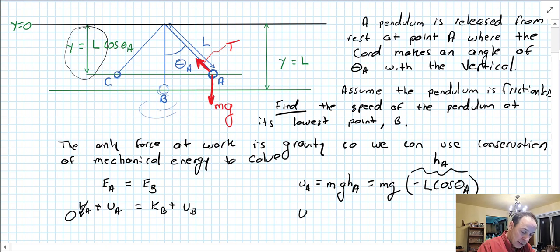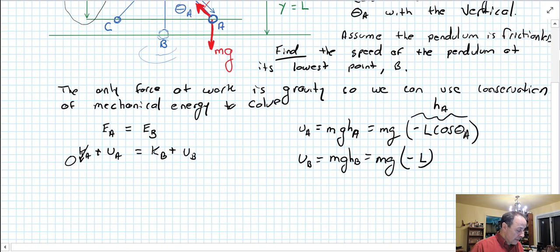The potential energy at B, the same form, it's still going to be mg that hasn't changed, and still going to be negative because it's still below, but now it's just L, a negative L, the length of the chord. Kinetic energy at B is one half the mass times the velocity at B squared.